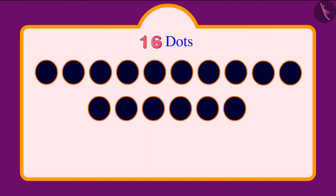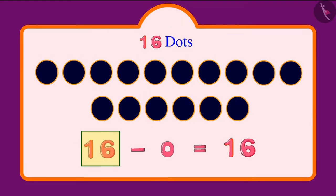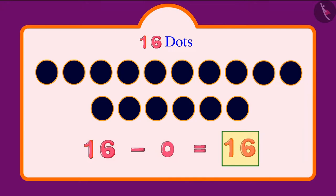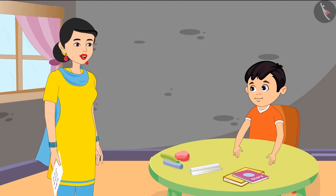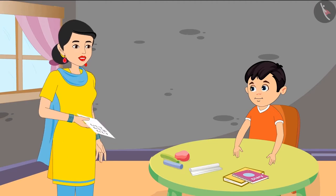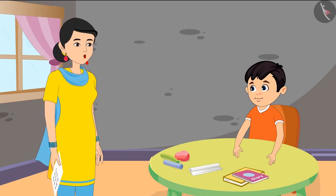See this — there are 16 dots. Now out of these, we have to subtract 0 dots. Now tell me, what does 0 mean? Not even 1. So when we did not subtract even 1 of the 16 dots, then how many dots are left with us? 16 dots, mommy. Yes Chotu, you are right — 16 dots. So actually this means, Chotu, if we subtract 0 from any number, or if we subtract nothing from that number, then we get the same number.